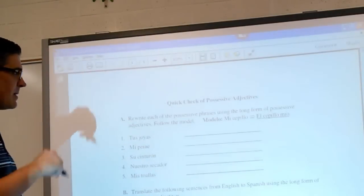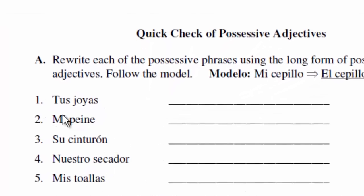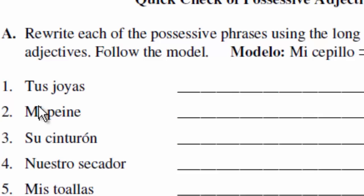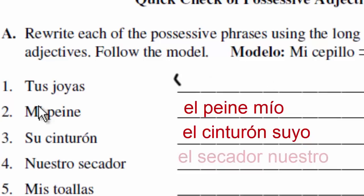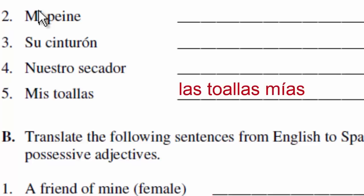Quick check: if I want to say tus joyas — your jewelry — but the jewelry of yours, it would be las joyas tuyas. Mi peine — my brush — the brush of mine: el peine mío. Su cinturón — the belt of yours: el cinturón suyo. Nuestro secador — the hair dryer of ours: el secador nuestro. Mis toallas — towels of mine: las toallas mías.